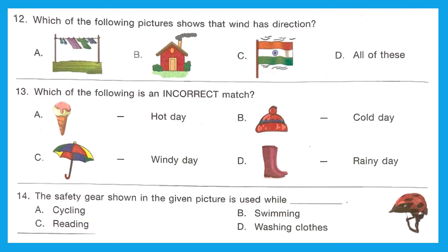Question 12: Which of the following pictures shows that wind has direction? Option A shows drying clothes moving in one direction — because of wind. Option B shows smoke from a chimney going in one direction. Option C shows a flag fluttering in one direction. All of these show that wind has direction, so the right answer is option D — all of these.